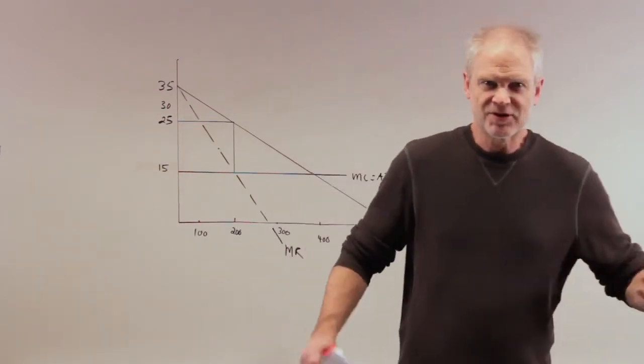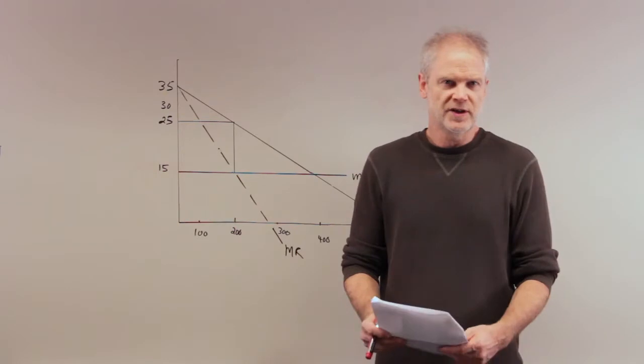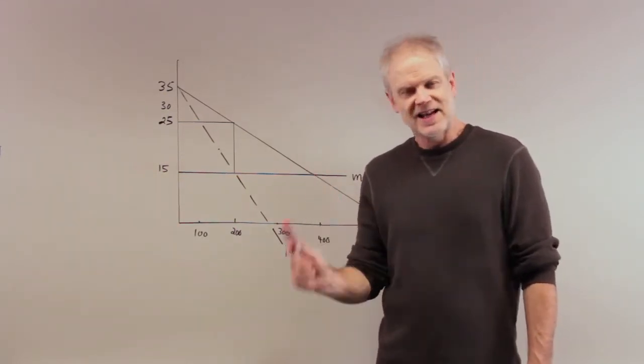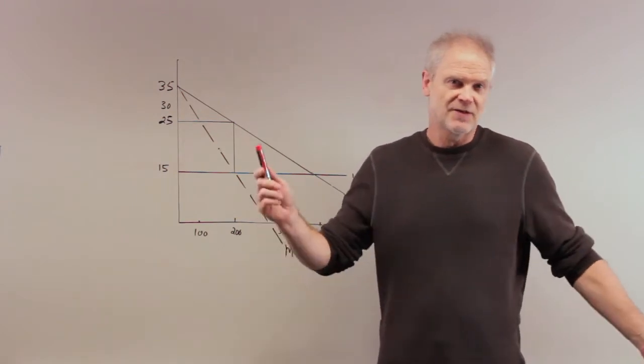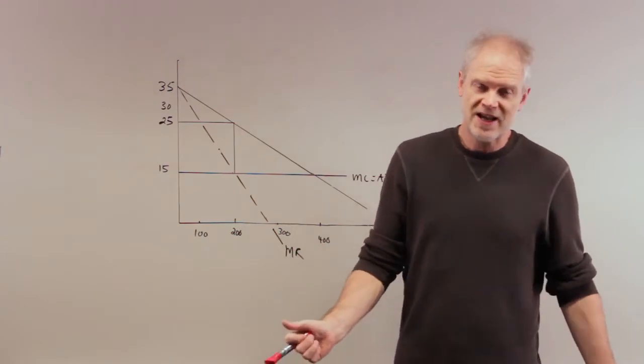What do we mean by that? The most simple example we talk about in class is elderly going to the movies. Movie theaters can discriminate by age because you can identify an elderly as being 65 or 60, whatever your age cutoff is, and you can charge according to their age. Why would you do that?